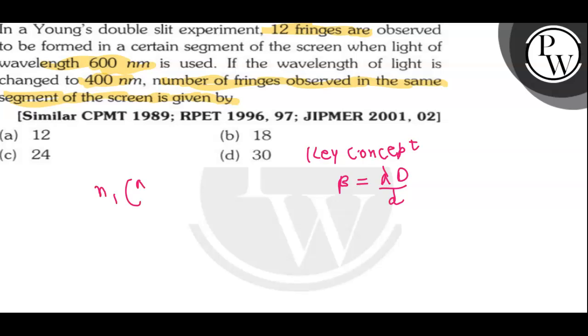times λ₁D/d must be equal to n₂ times λ₂D/d. Here D/d is common to both, so we can cancel it. Now we are left with n₁